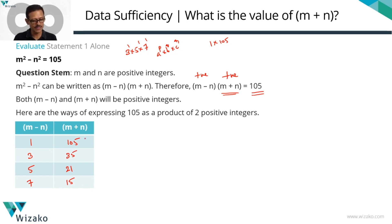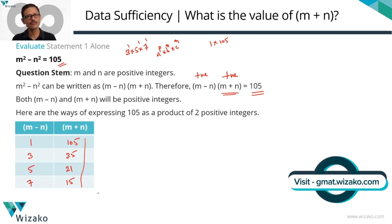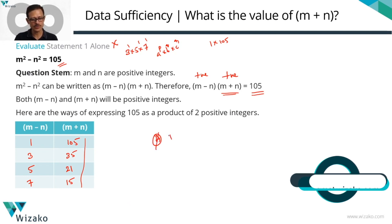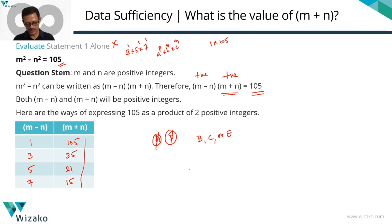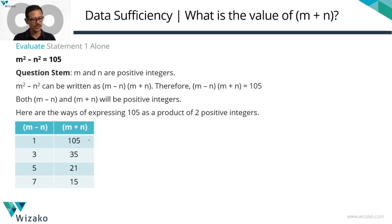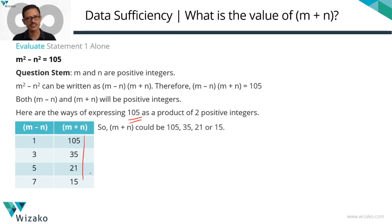Our objective is to find a unique value for m plus n. Since m plus n can take 4 different values, the moment you find a second possible value you can conclude the statement is not sufficient. Statement 1 alone is not sufficient. This eliminates answer options A and D — we're down to B, C, or E. Let's evaluate statement 2 to determine which one it is.